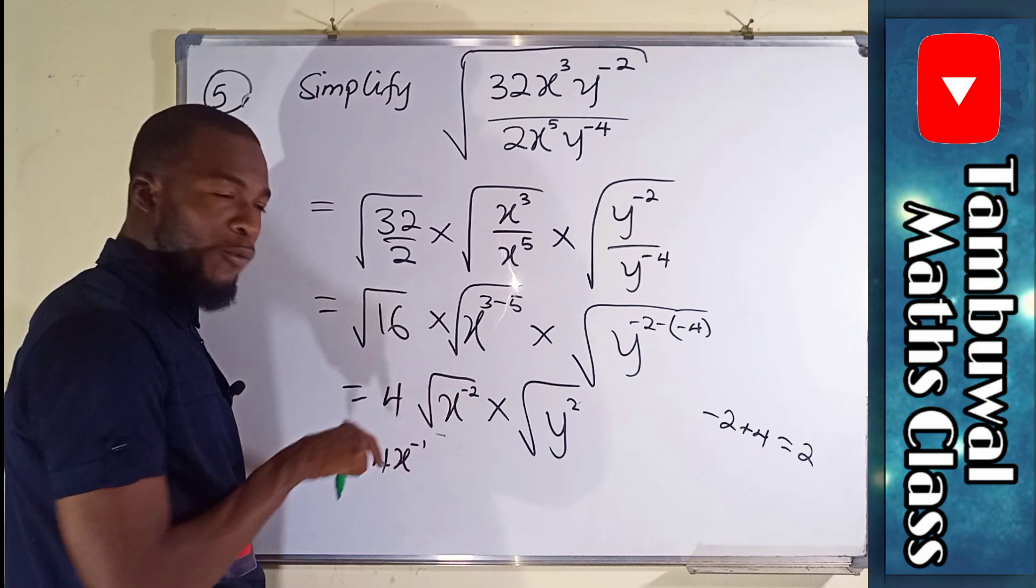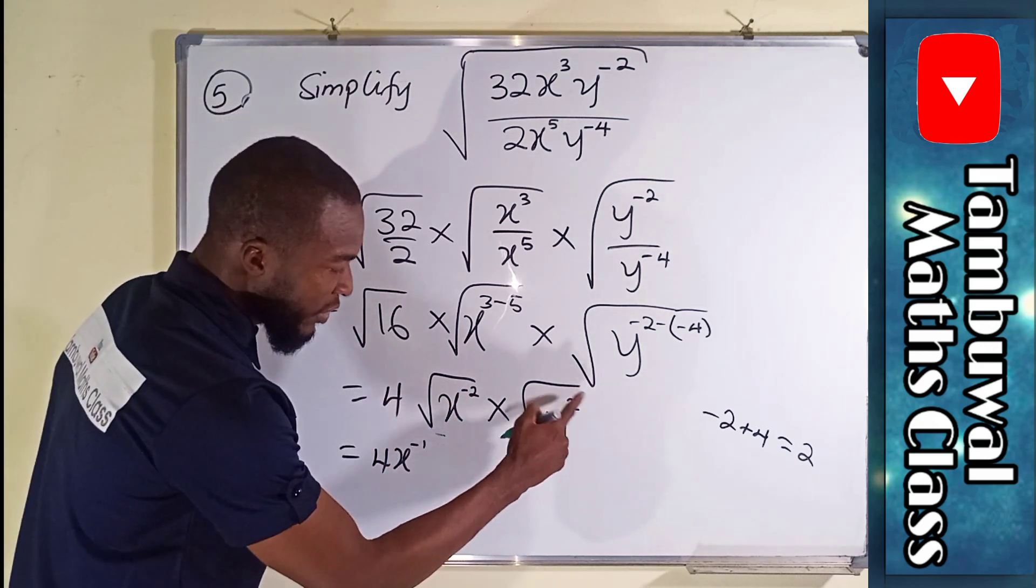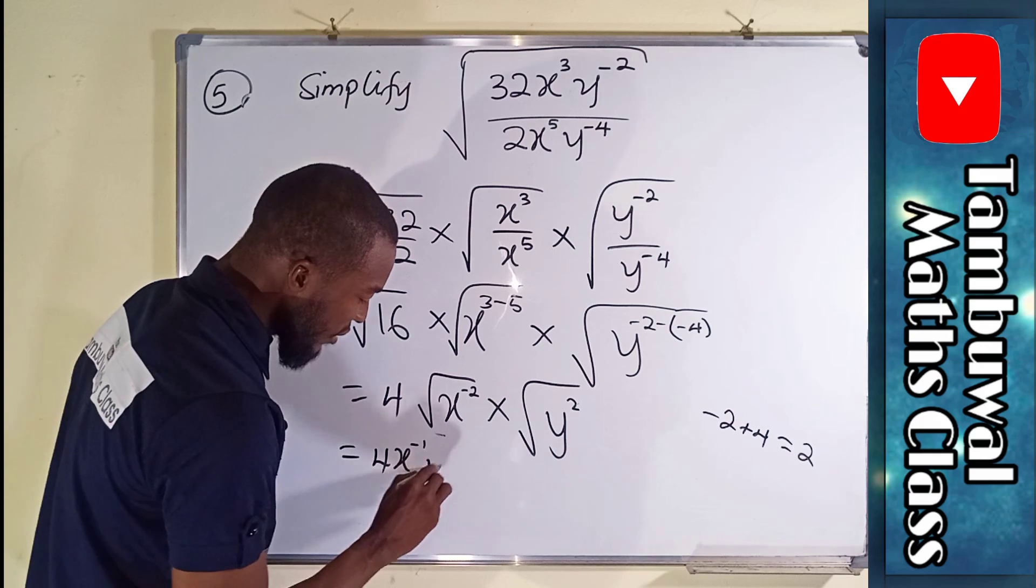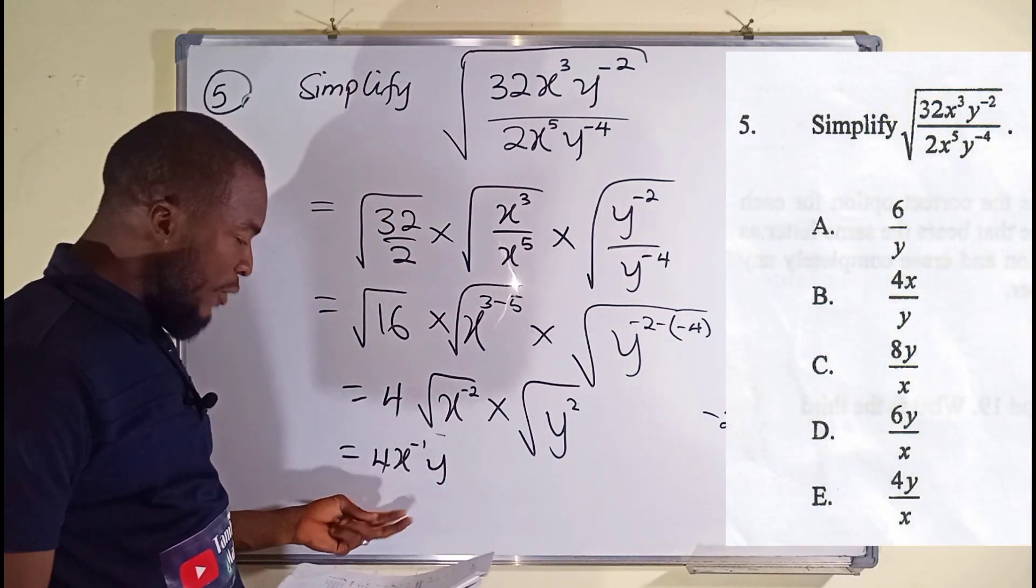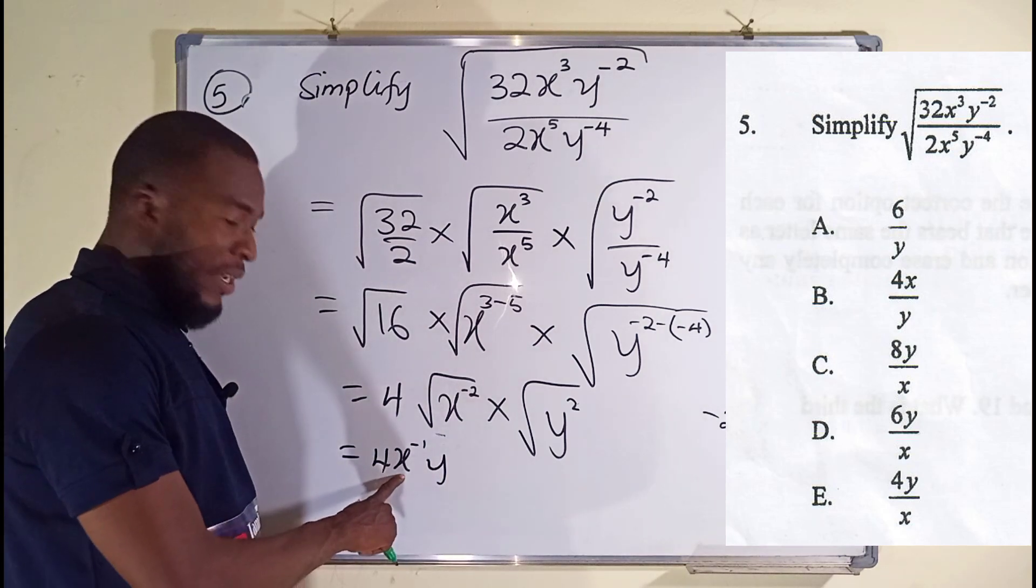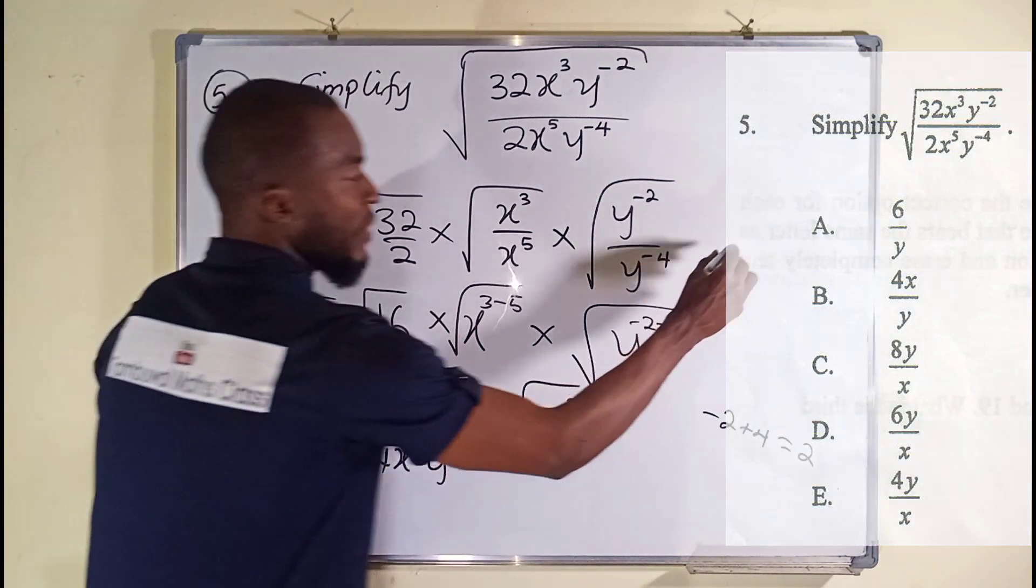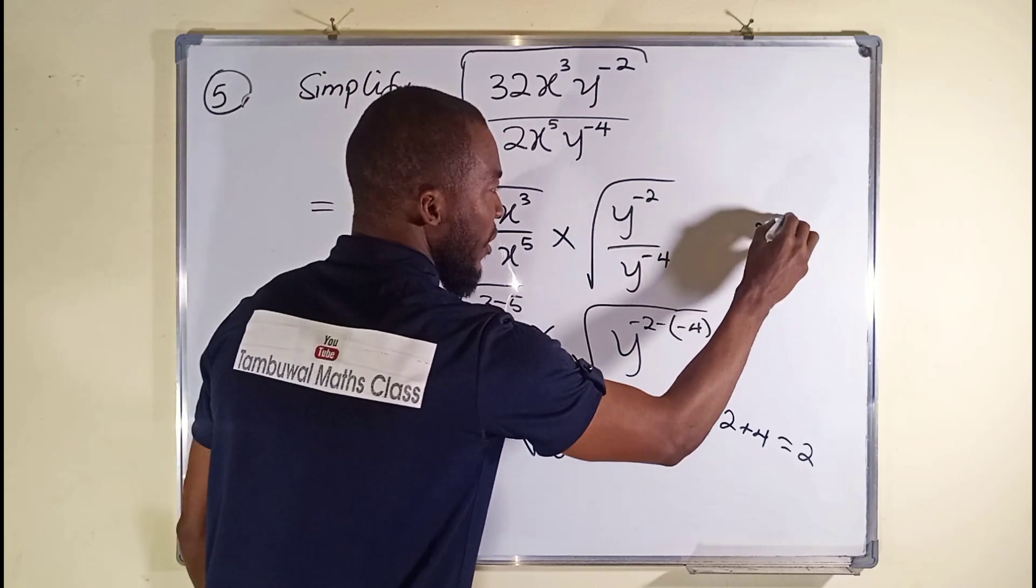Because it is only the 2 that cancel the square root, we still have negative 1, but this one is positive, it will cancel just direct. So this is our final answer, but here you can see the applied law of indices.